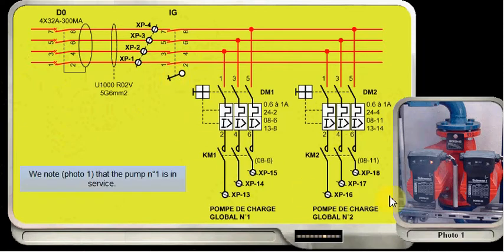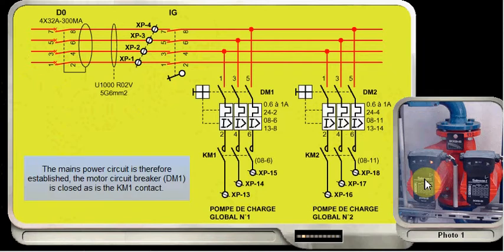We note photo 1 that pump 1 is in service. The main power circuit is therefore established. The motor circuit breaker DM1 is closed, as is the KM1 contact.